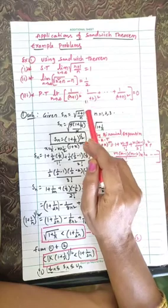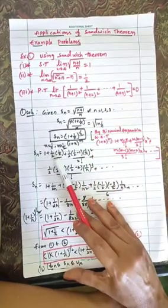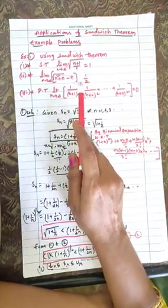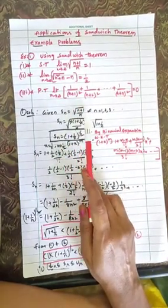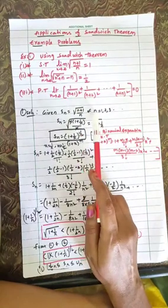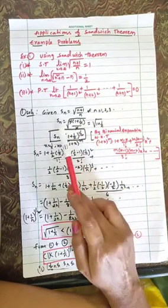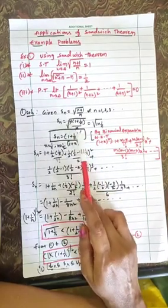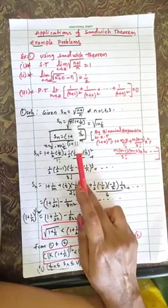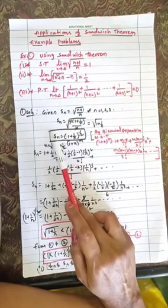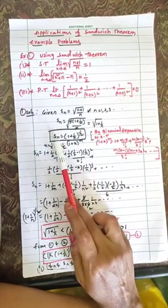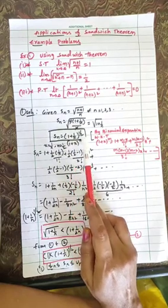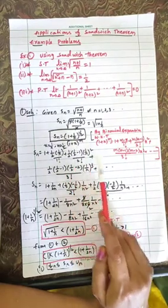First we will see the first problem. We have to prove these using the sandwich theorem. In the first equation, sn is given as root of (n+1)/n where n is a natural number. Here, in the numerator take n as common and both will get cancelled, so the simplified term is sn = (1 + 1/n)^(1/2), which is in the form (1+x)^m.